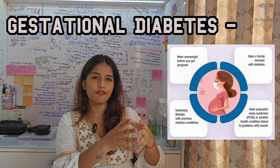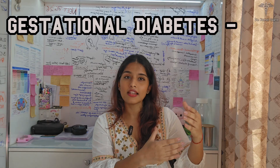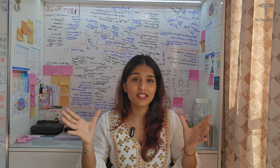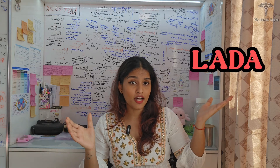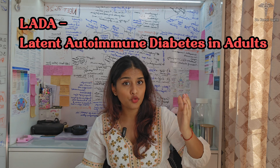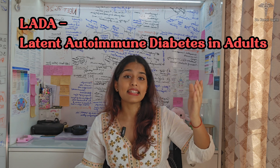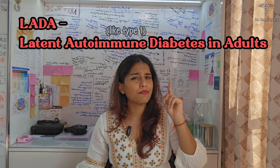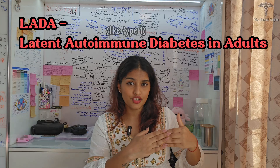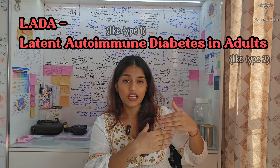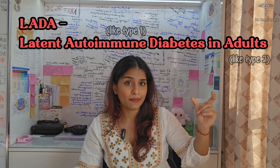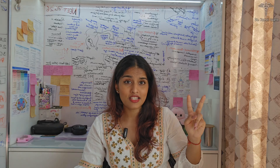Two less commonly known types are LADA and MODY. LADA stands for Latent Autoimmune Diabetes in Adults. It is autoimmune like Type 1, but it doesn't manifest in the early stages of life — it shows up later, which is why it's called latent autoimmune diabetes.